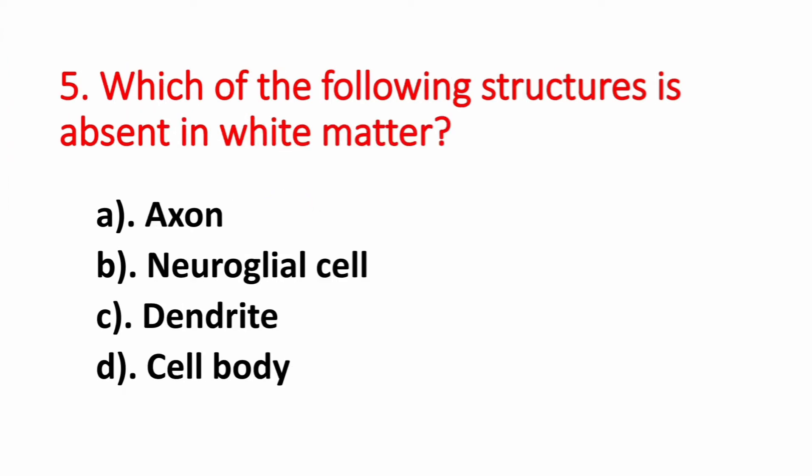Question number 5. Which of the following structures is absent in white matter? Option A: Axon. Option B: Neuroglial cells. Option C: Dendrite. Option D: Cell body. The answer is Option D, Cell body.